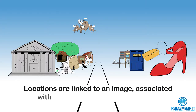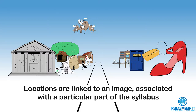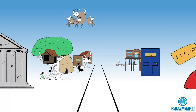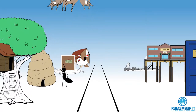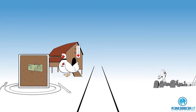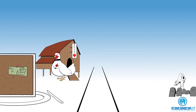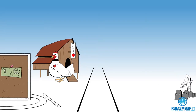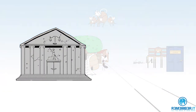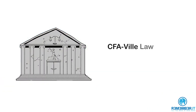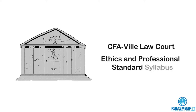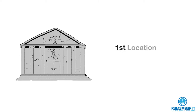We use the same gun-to-hen 1-to-10 rhyming connection throughout all of our materials, so you'll get very used to them. The locations are also linked to an image that allows you to associate the location with a particular part of the syllabus. The easiest way to see how this works is to explore the village and look at each location in turn.